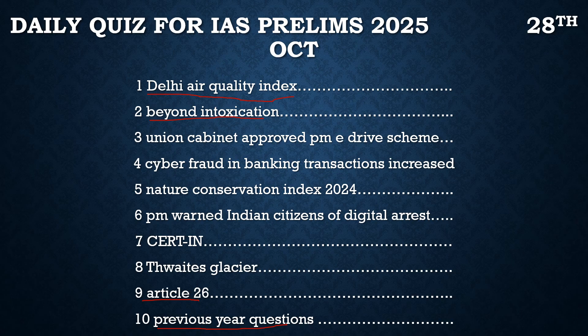In the exam, a direct question can be asked about which list liquor falls under, or about the differences between industrial alcohol and potable alcohol. The next article is about the union cabinet's approval of the PM E-DRIVE Scheme, which provides funding and incentives for electric buses for public transportation, with a contribution of 14,000 crore to the scheme along with a PM E-Bus Sewa Payment Security Mechanism. One drawback is that the private sector has not been included.